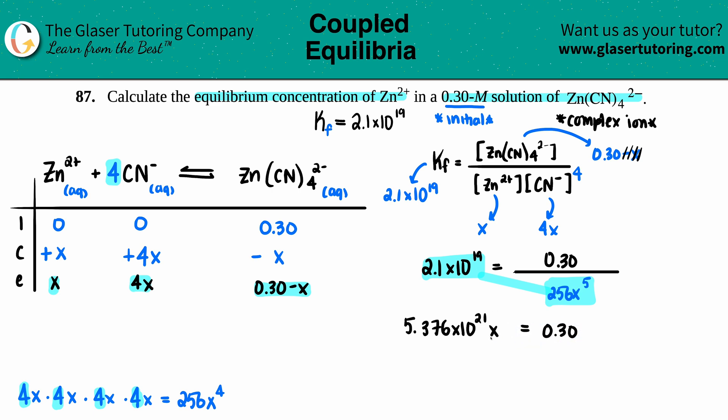That's x to the 5th. To get x by itself, divide by that number, 5.376 times 10 to the 21st. Now we're just left with x to the 5th equals 0.3 divided by that answer. I get a long decimal, so I'll try to keep as many numbers as I can: 5.580357 times 10 to the negative 23rd.